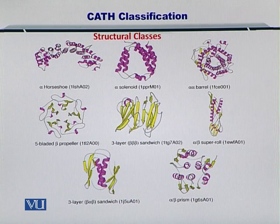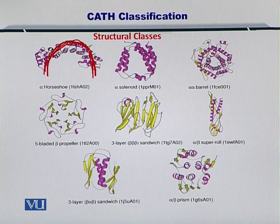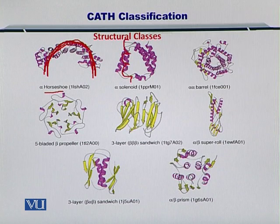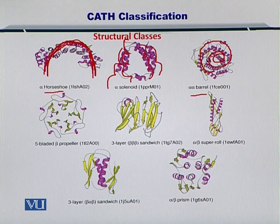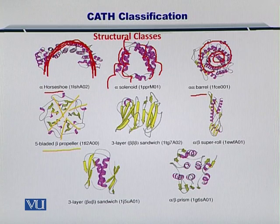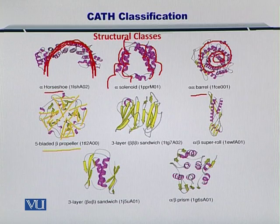The alpha helix horseshoe is constituted of alpha helices only, shaped like a horseshoe. Then there is the alpha solenoid, where many alpha helices are organized like a solenoid or a spring. Next is the alpha-alpha barrel, where the entire structure is organized by alpha helices in the form of a barrel. An interesting example is the beta propeller, where the shape of the protein is actually like a propeller, showing how beta sheets are organized.